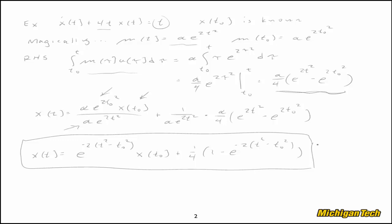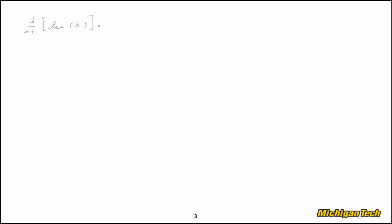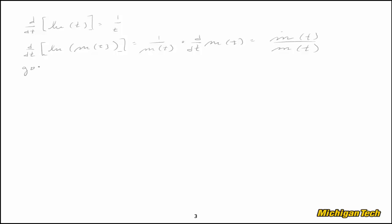We cheated by just stating the integrating factor magically, so now let's look at how to calculate it. First, a calculus review: d/dt of ln(t) equals 1/t. More generally, d/dt of ln(m(t)) equals 1/m(t) times d/dt of m(t), which is m-dot(t)/m(t). Let's set that aside and use it in a moment.